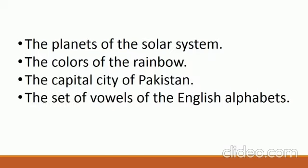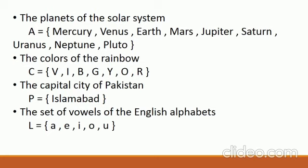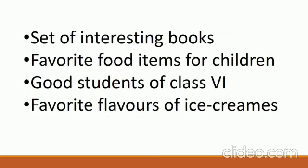Well-defined collections include: the planets of the solar system — we all know there are eight; the colors of the rainbow — there are seven colors which are violet, indigo, blue, green, yellow, orange, and red, and any other color is not an element of rainbow; the capital city of Pakistan; and the set of vowels of the English alphabets. While sets of interesting books, favorite food items for children, good students of a class, and favorite flavors of ice cream are not well-defined sets because they depend on personal choice.